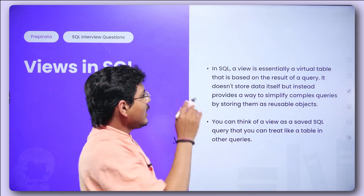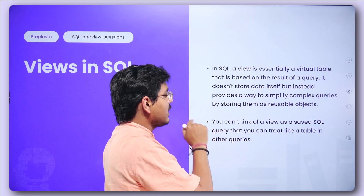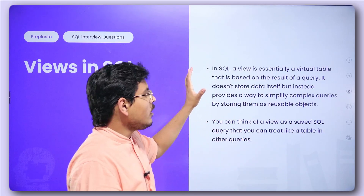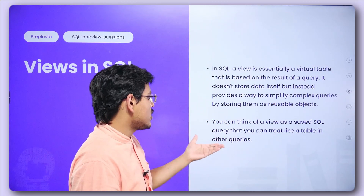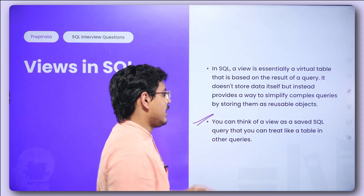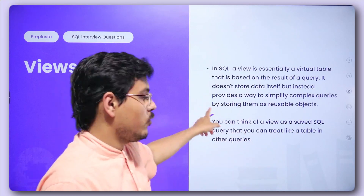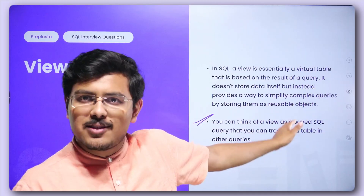Views in SQL: a view is essentially a virtual table that is based on the result of a query. It doesn't store data itself but instead provides a way to simplify complex queries by storing them as reusable objects. A view is a saved SQL query that you can treat like a table in other queries. If you haven't read about views yet, implement them first and this will become a cakewalk.